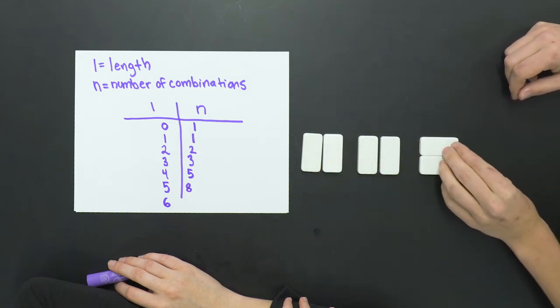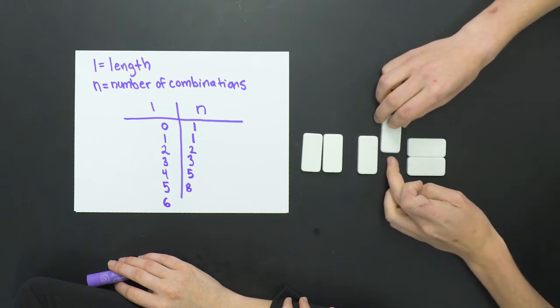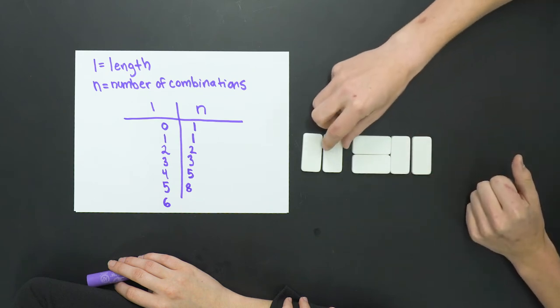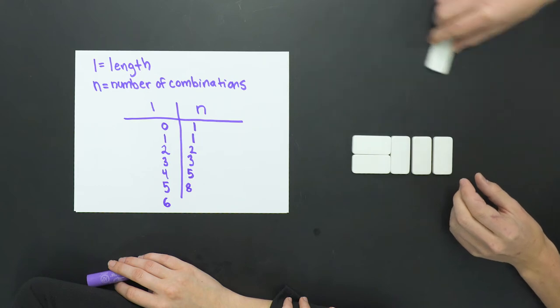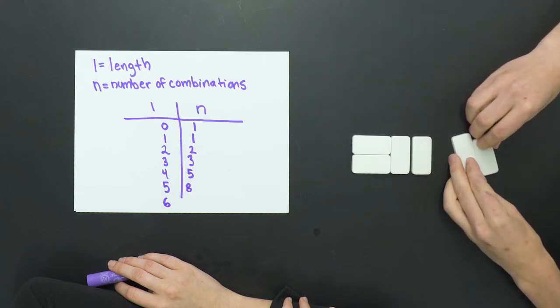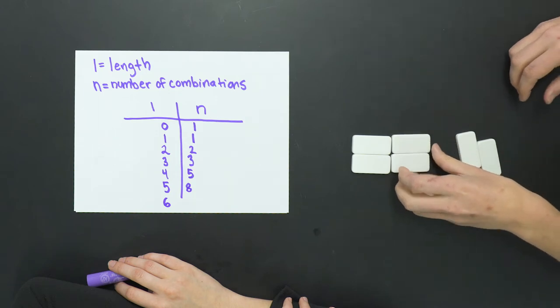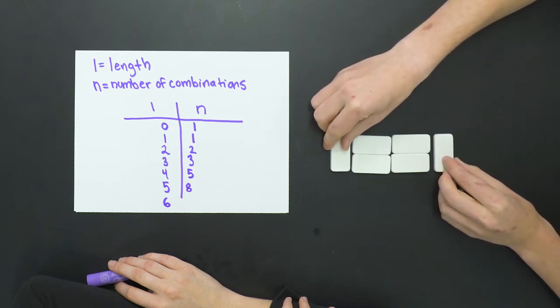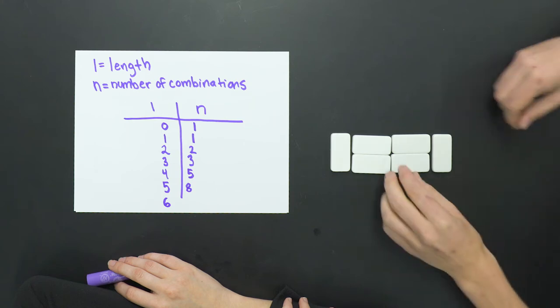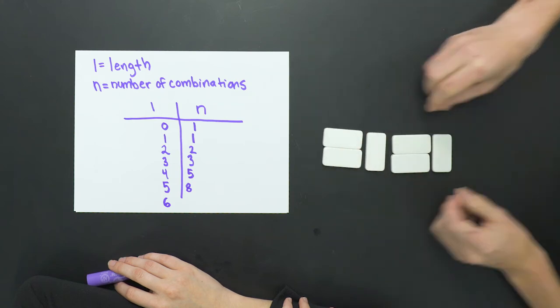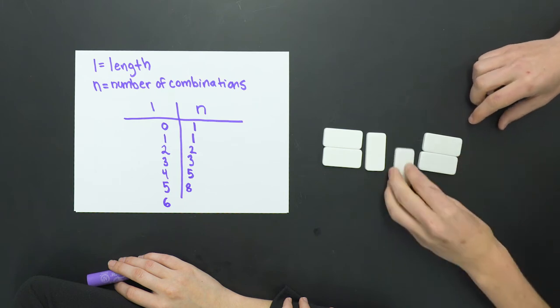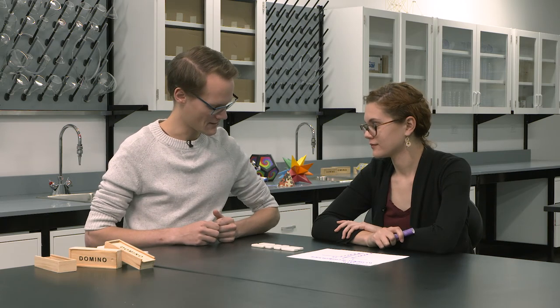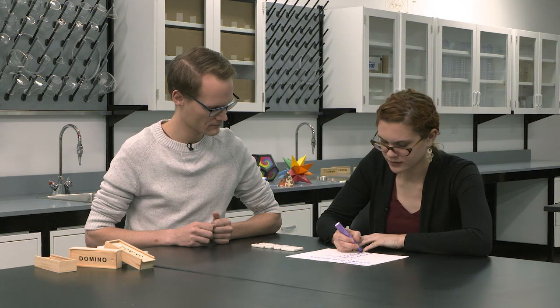And we remember that this would be three. And then this will be four. And five. And now things are going to get a little bit complicated. So this is now six. And seven. Eight. And nine. And then if I turn these two sideways, then this is 10. And 11. And 12. And 13. Can you see any other ways? I think that's it. So I'm going to add 13 to our list here.